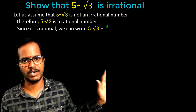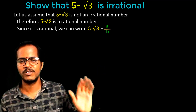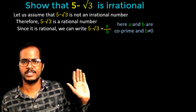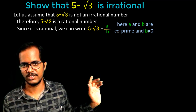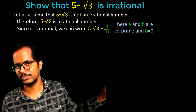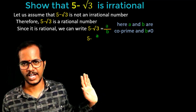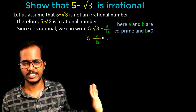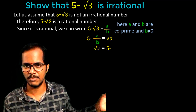Here, suppose A and B are co-prime and B is not equal to 0. So 5 minus root 3 equals to A by B. In this equation, let us transpose minus root 3 to the right hand side and transpose A by B to the left side. We get 5 minus A by B equals to root 3. This can also be written as root 3 equals to 5 minus A by B.